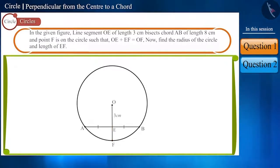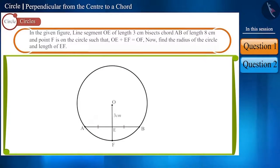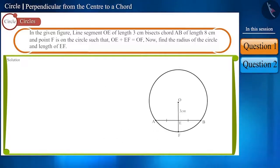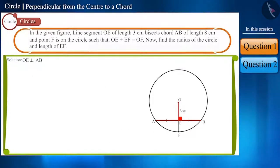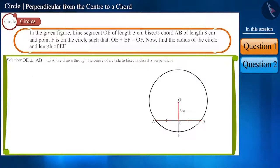Let's solve this. We are given that line segment OE bisects the chord AB, and in the figure, you can see that point O is the center of the circle. So, line segment OE will be perpendicular to chord AB, because a line drawn through the center of the circle to bisect a chord is perpendicular to the chord.